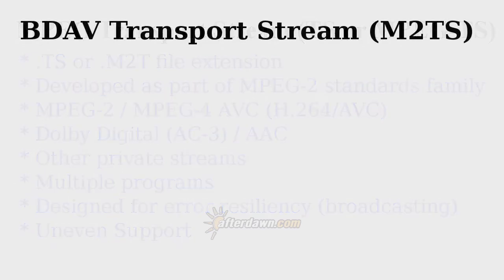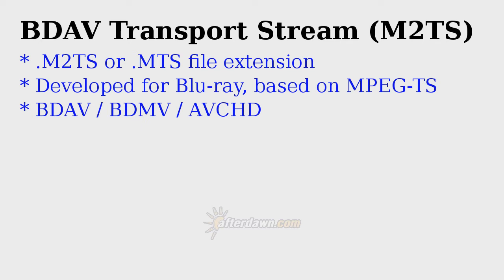The advanced features available in transport streams have resulted in them being the container of choice for the Blu-ray disc standard. This container is officially called BDAV, but typically referred to as M2TS, which also happens to be the standard file extension. Alternatively, for use in certain file systems where only 3-letter file extensions are used, it may just be .MTS. It's part of the BDAV standard used for Blu-ray movie, or BDMV, format. It's also used in the related AVCHD format used by many high-definition camcorders and supported by most, but not all, Blu-ray players. M2TS files are also found in applications outside of the Blu-ray world in HDV camcorders. In addition, some digital video recorders, or DVRs, also remux digital TV captures from their native transport streams to BDAV transport streams.